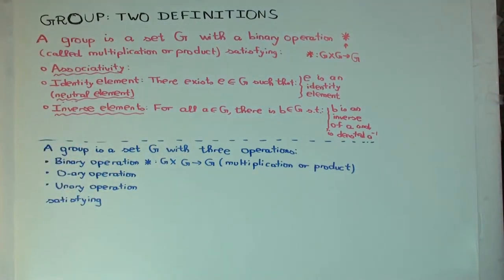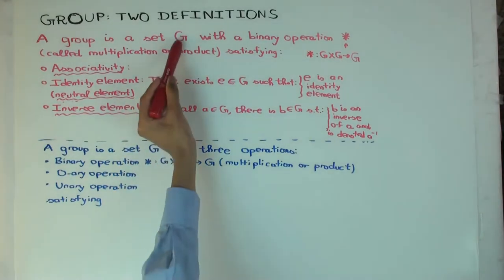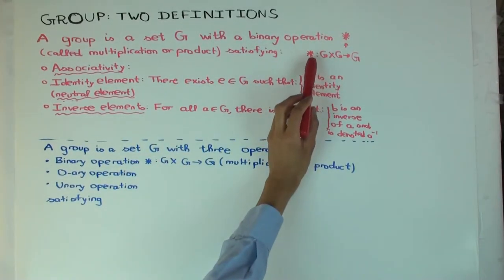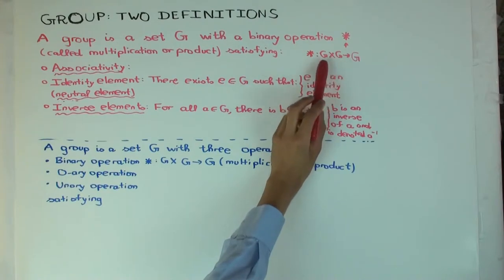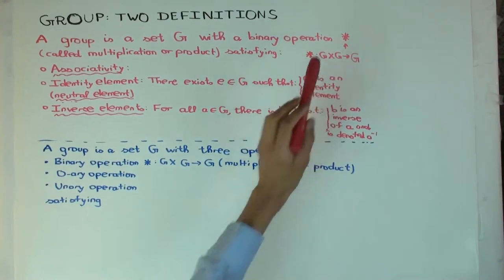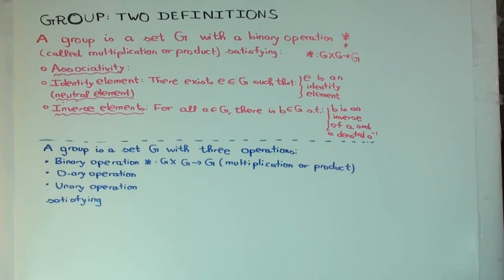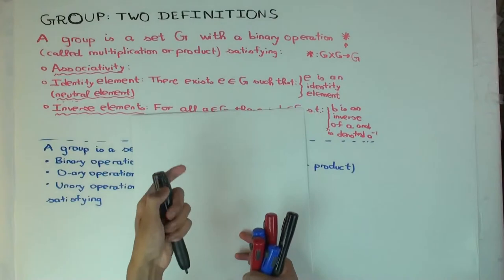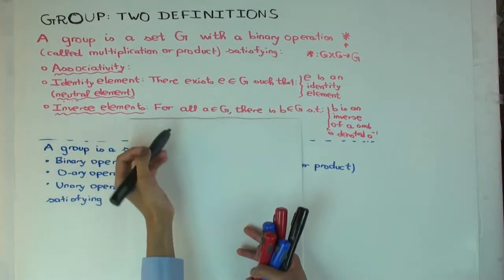It says that a group is a set G with a binary operation, star. Which means star is an operation which takes two inputs from the group and gives an output. So when we usually write functions, we write f of x, y, but the notation we'll use for this is the infix notation.